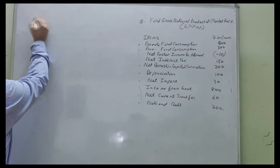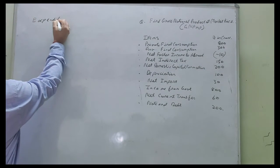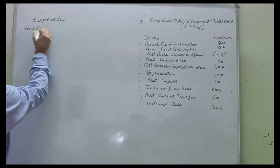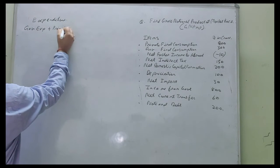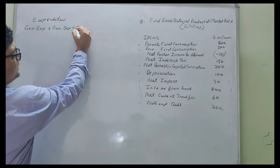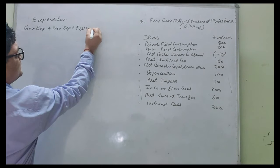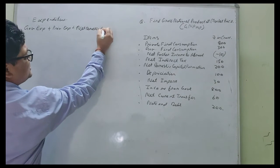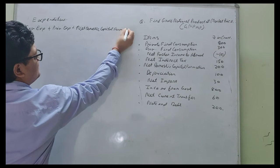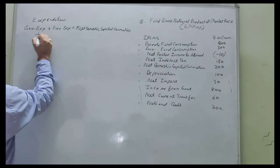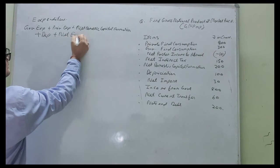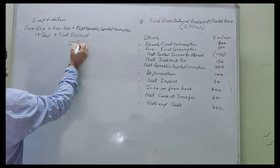Expenditure method states that government expenditure plus private expenditure plus net domestic capital formation plus depreciation plus net export equals GDP MP.